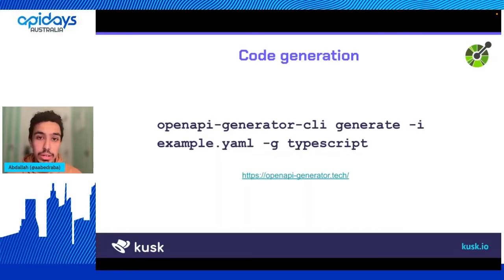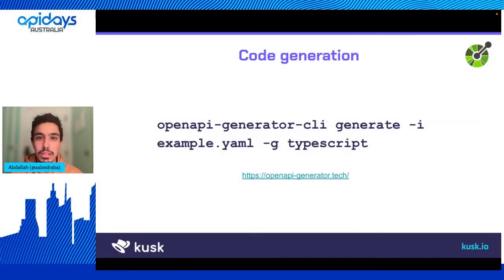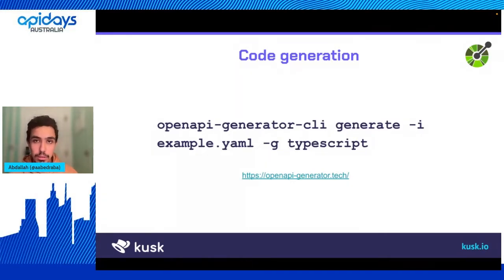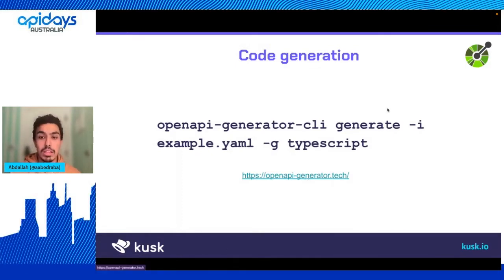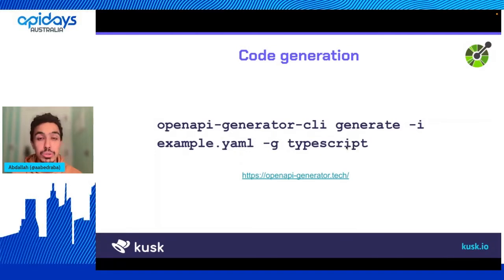One of the cool things you can also use is code generation tools. These code generation tools generate the scaffolding or boilerplate code that you can then work upon, and they greatly increase the speed of development. Here you'll see that the OpenAPI Generator is the command — you just pass the generate command, pass an OpenAPI definition, say what language you want to generate the code for, and it will generate it for you.